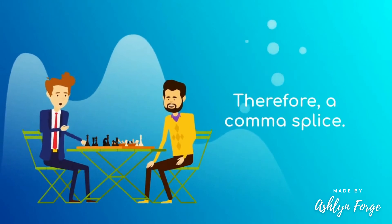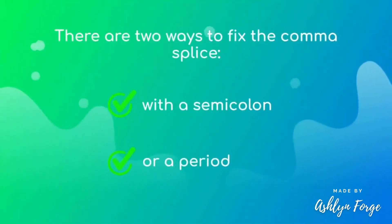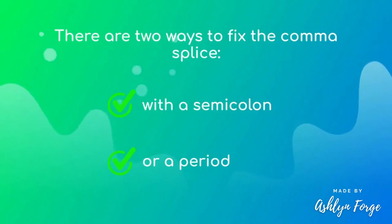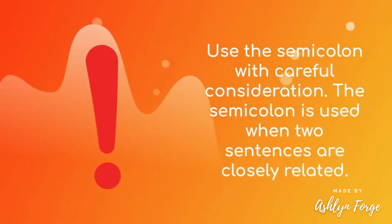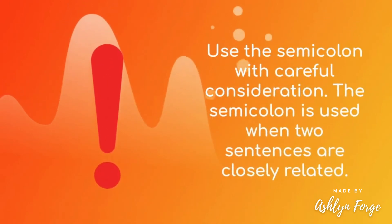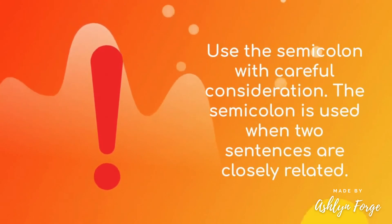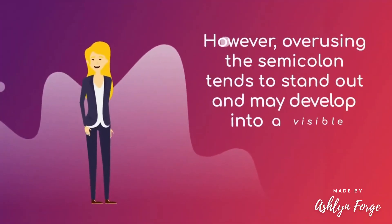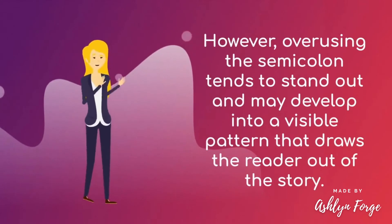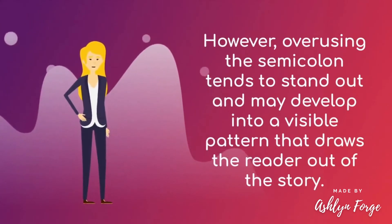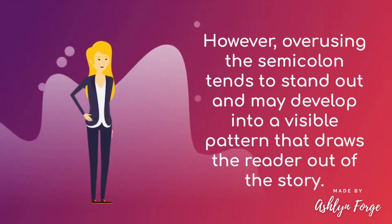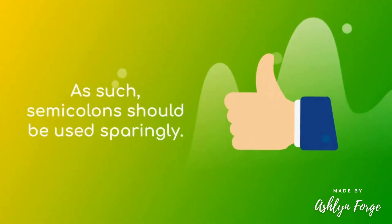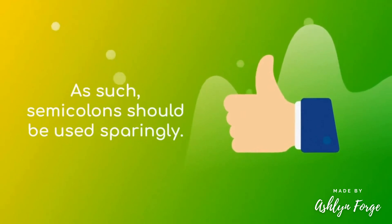How do you fix it? There are two ways to fix the comma splice: with a semicolon or a period. Caution — use the semicolon with careful consideration. The semicolon is used when two sentences are closely related. However, overusing the semicolon tends to stand out and may develop into a visible pattern that draws the reader out of the story. As such, semicolons should be used sparingly.